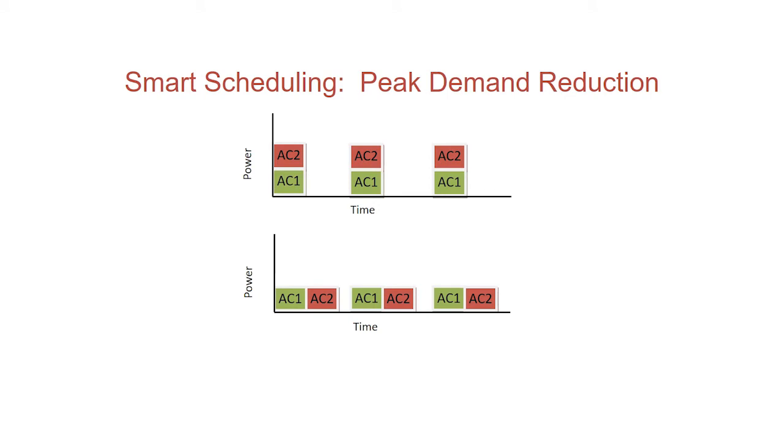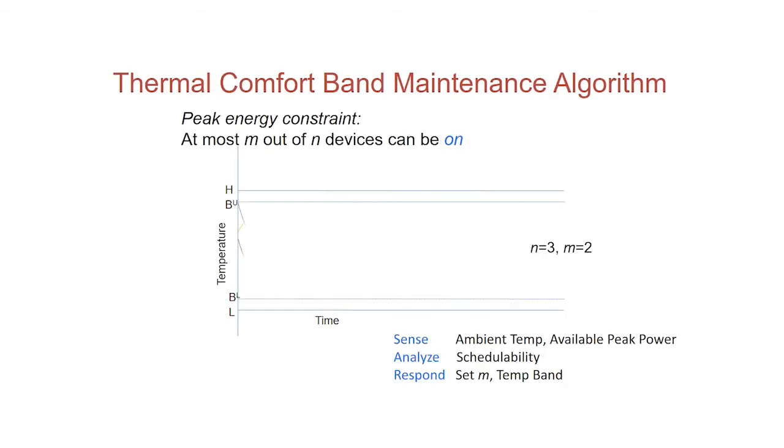Now, if you have two such things working together, in the morning, for example, you come into this auditorium, turn on all the air conditioning units, the peak happens. What you want to do is to have a profile which looks like this, which looks like a flat profile, but you have to do this very carefully, because otherwise the conditioning of the room will be affected. So, to do that, we have something called the thermal comfort band maintenance algorithm or TCBM. For those of you who know TCBM from the Cold War days, this is not that. This is temperature control.